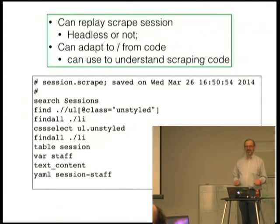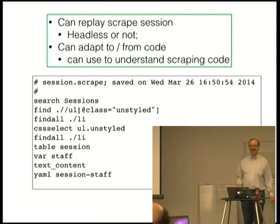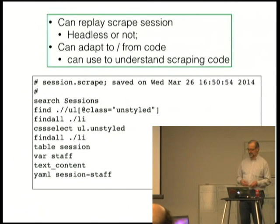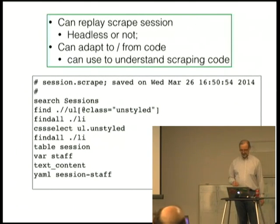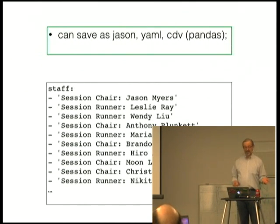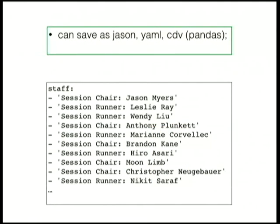So this is what gets saved when you save a session. You can edit it, you can comment it, you can replay the session headless or not — it doesn't matter. The head is just a nice way to highlight something and quickly get the context of the actual HTML text without having to go to the source and scroll through it yourself. You can do it with XPaths. And you can save the data, which is basically just a table, in either JSON, YAML, or CSV.